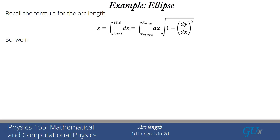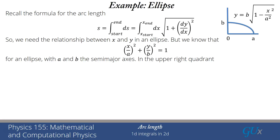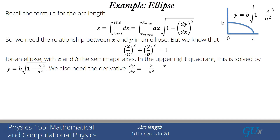Now let's do the same thing for an ellipse. Everything is exactly the same except the relationship between x and y is slightly different. The formula is (x/a) squared plus (y/b) squared equals one. We're going to solve for y — calling a and b the semi-major axes — and the solution is y equals b times the square root of 1 minus x squared over a squared. We still need the derivative via the chain rule: dy/dx equals minus (b/a squared) times x divided by the square root of 1 minus (x/a) squared, which simplifies to b over a times x divided by the square root of a squared minus x squared.